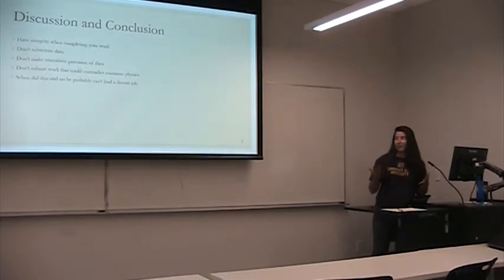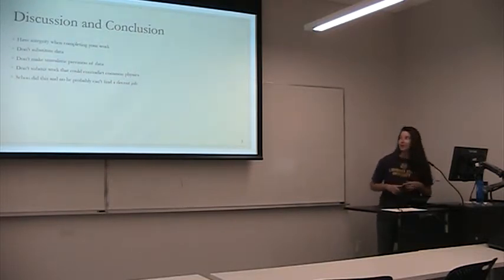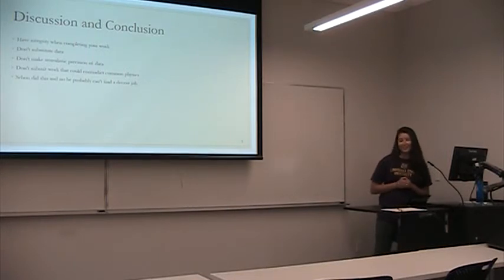All of my graphs and stuff that I've had in this whole thing were just something I found because I thought I was going to be able to find more information on his actual work. He pretty much substituted data, he made unrealistic precision of data, and he would contradict common physics. The moral of this presentation is don't fake your work or you'll get fired and your PhD revoked. Any questions?